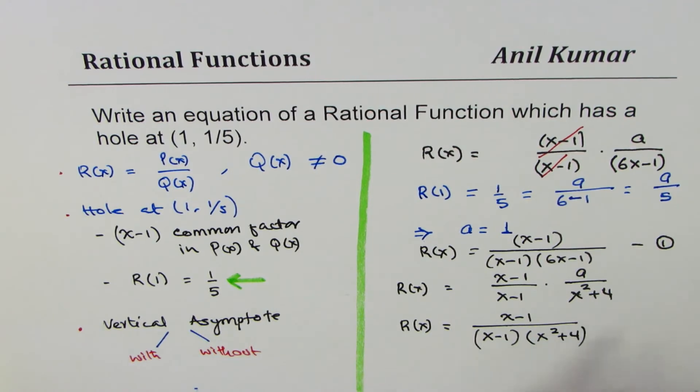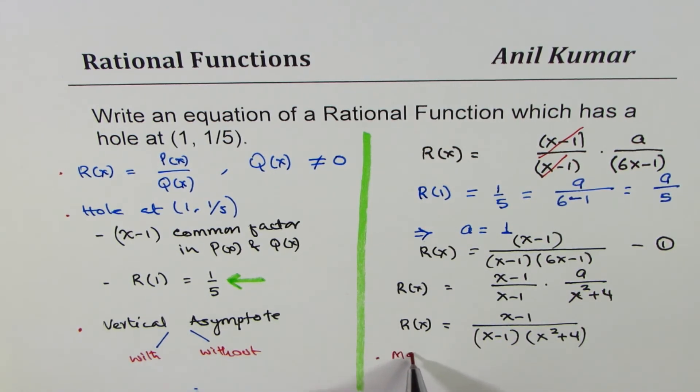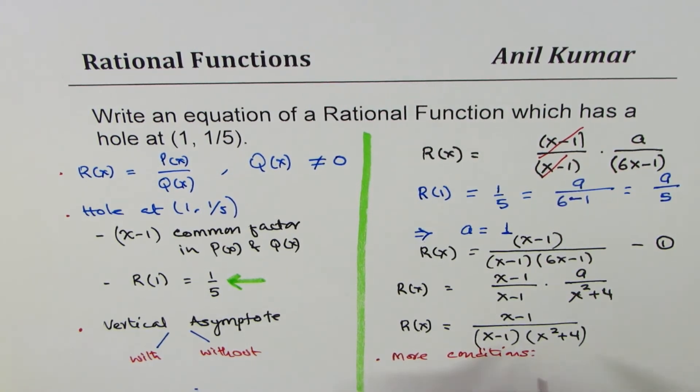You'll be asking, why did I introduce 'a' when it was supposed to be 1? We introduce 'a' so that you understand that there could be more conditions, like I could give you an x-intercept. Now that will give you the value of 'a'.